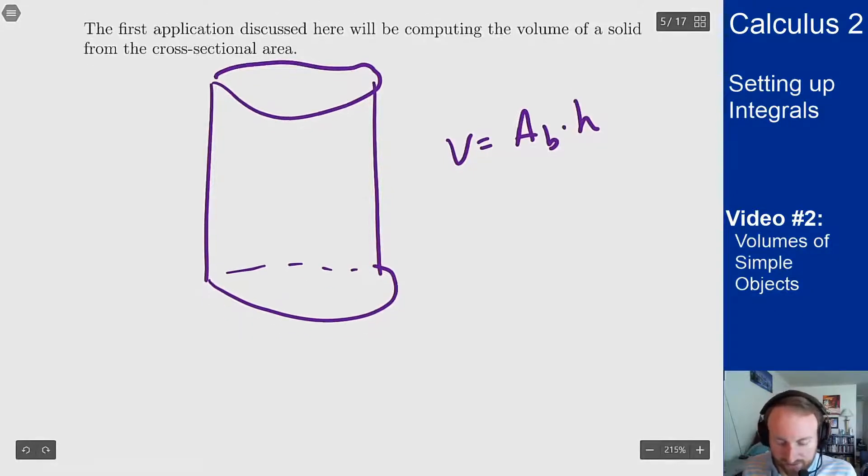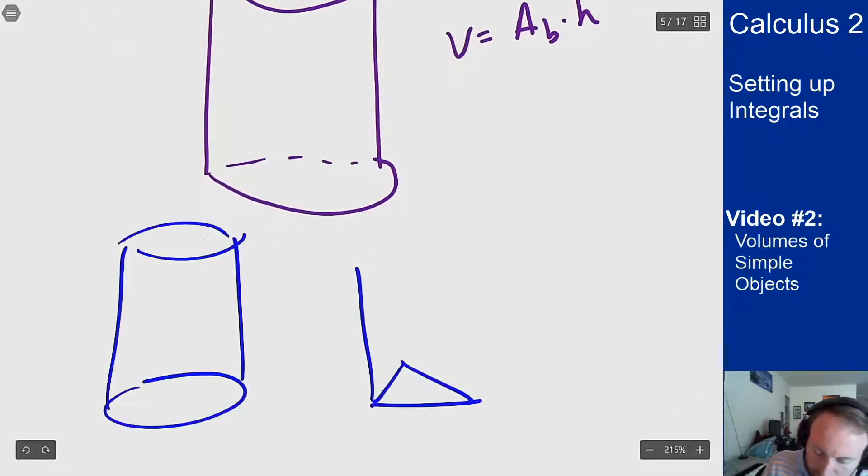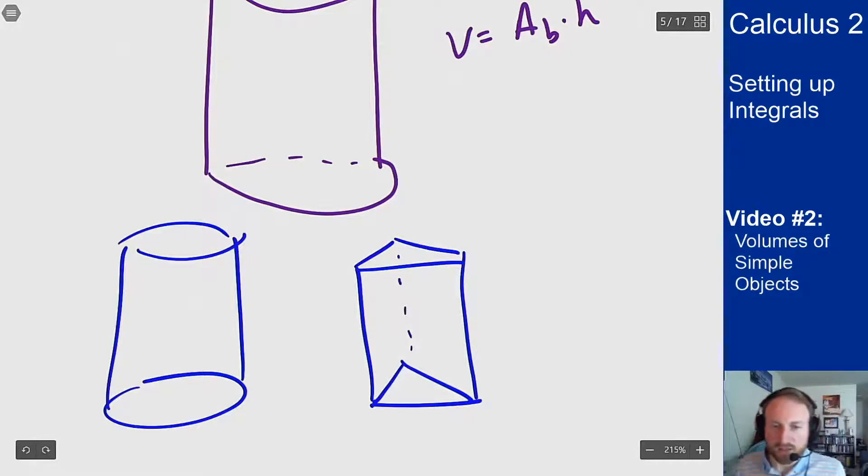It doesn't matter if it's a weird shape like that, a circle, or a triangle base. It doesn't matter what shape it is. It's always the area of the base times the height.